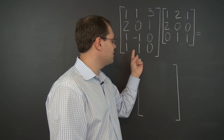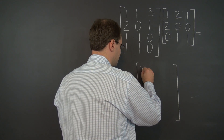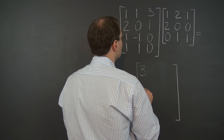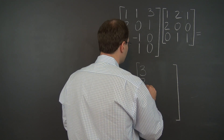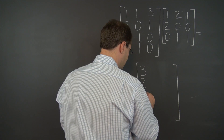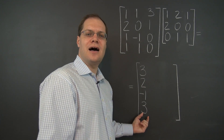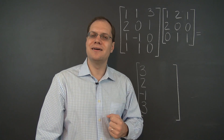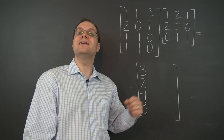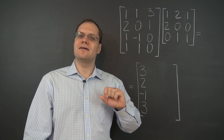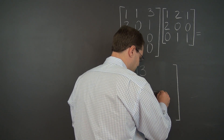So it's one of the first column plus two of the second, which results in three, two, negative one, and three. The first column of the result is established. Let's move on to the second column, but let's not establish the entire column — let's focus on just one entry, this one.